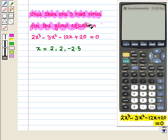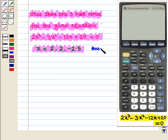Thus there are 3 real zeros for the given equation 2x³ - 3x² - 12x + 20 = 0 and these are x = 2, 2, and -2.5. This is the required answer.